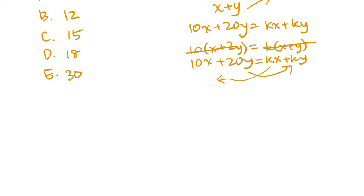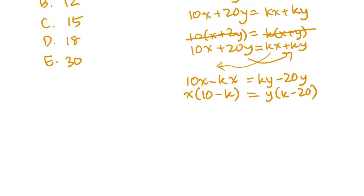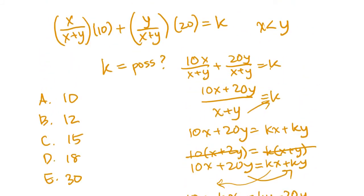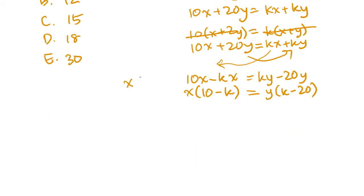Here's what I'm going to do. I'm going to move kx over. So it's 10x minus kx equals, and you subtract the 20y, and you get ky minus 20y. Now I factor out the x, 10 minus k equals, and you factor out the y to get k minus 20. Now it looks like something that we might be able to manipulate.